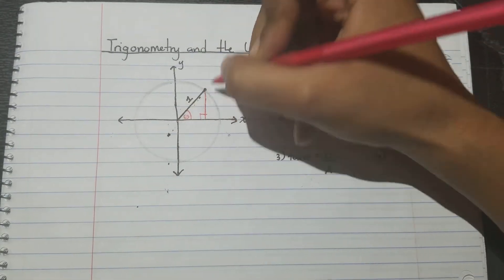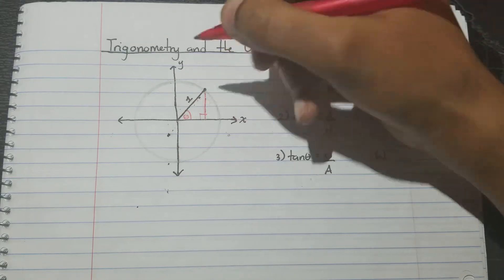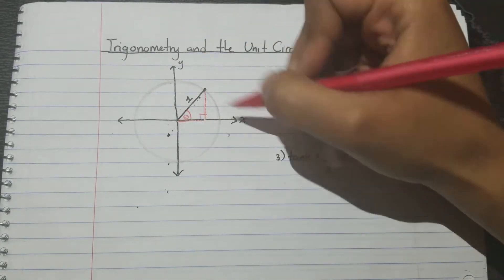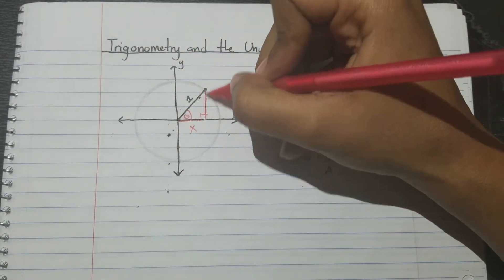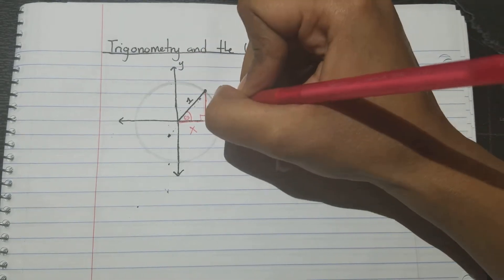Now we need variables to represent these missing sides. Since this is along the x-axis, we're going to put an x. Since this is going up and down, we're going to put a y.